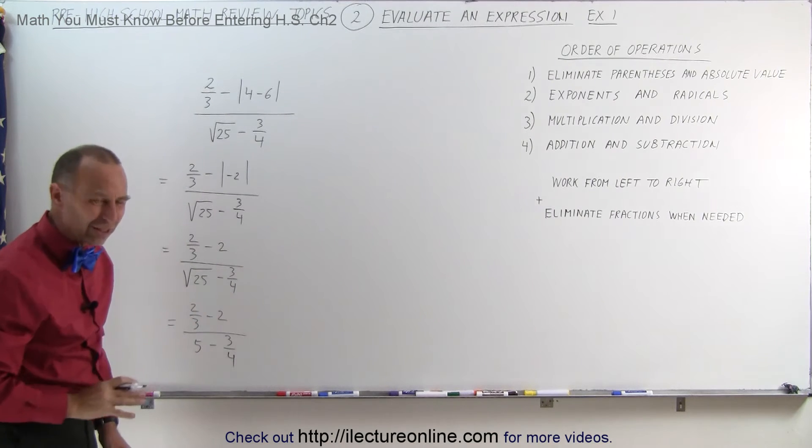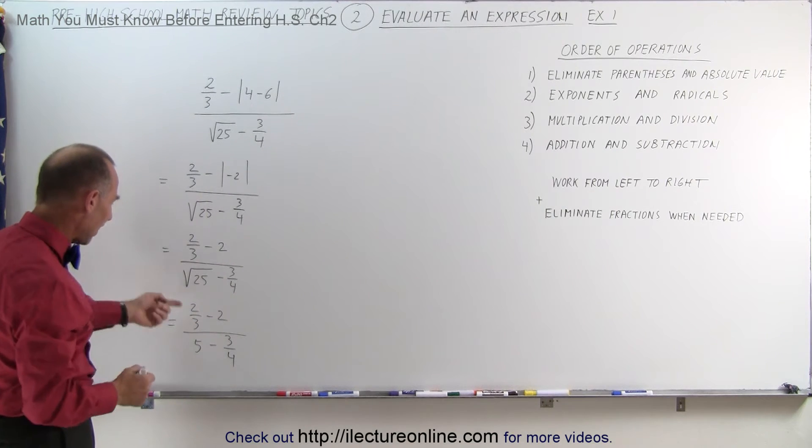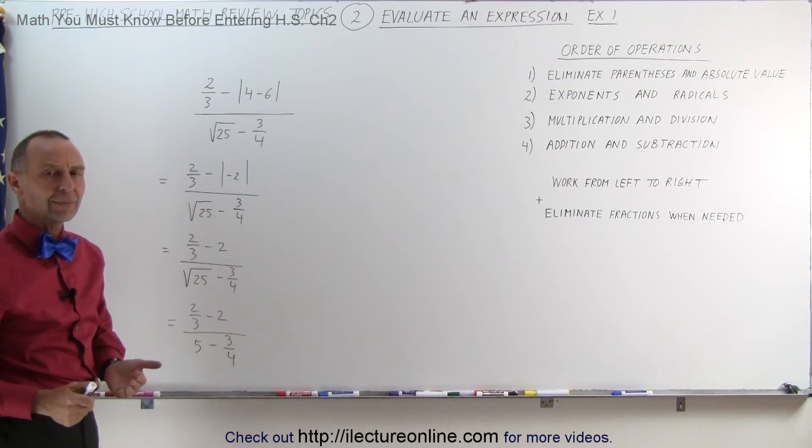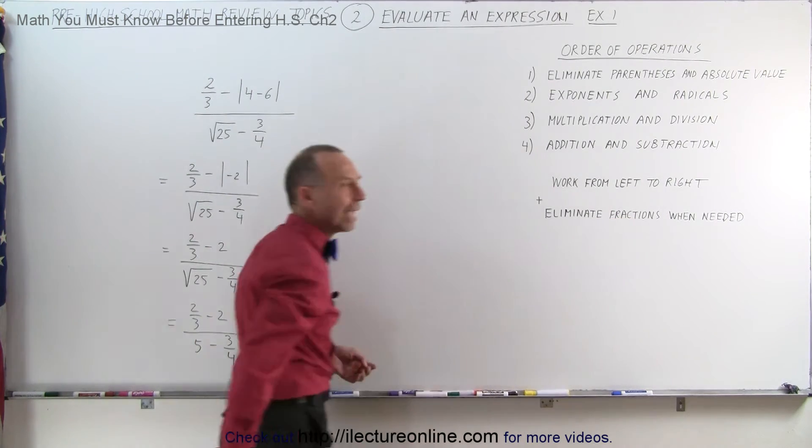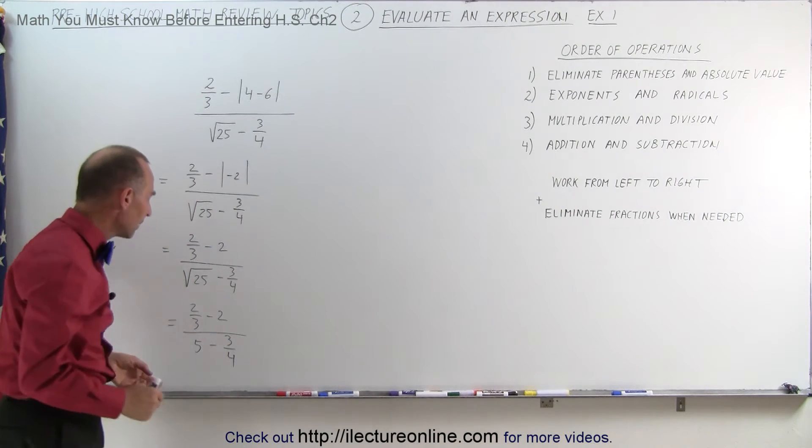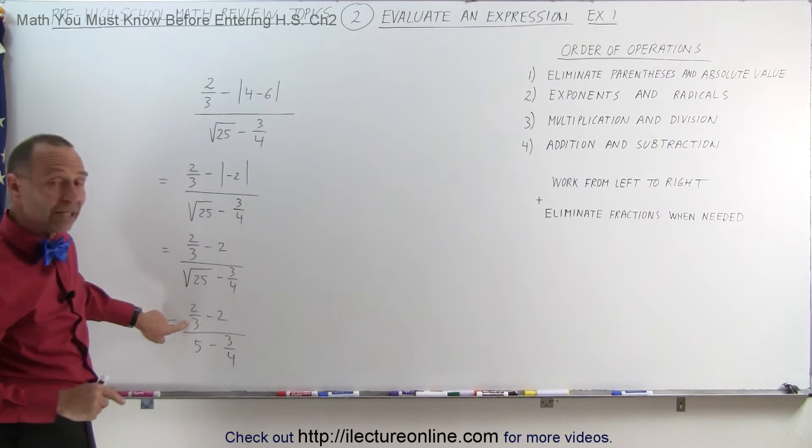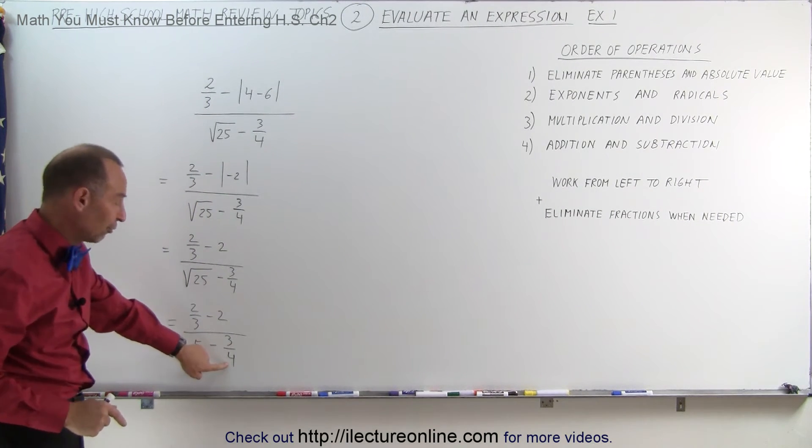Now we have something that looks kind of messy and complicated. We have a fraction in the numerator, we have a fraction in the denominator. How do we get rid of that? So now we get to this point where, when needed, that's when we tackle it. This is a good point to do that. Notice that the denominator here is 3 and the denominator there is 4.